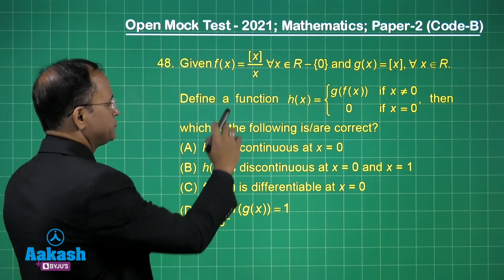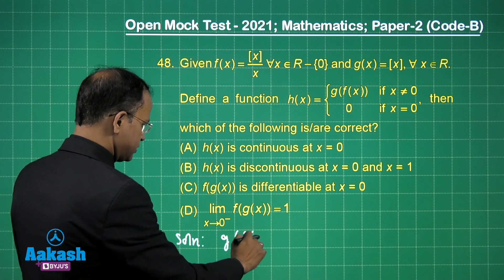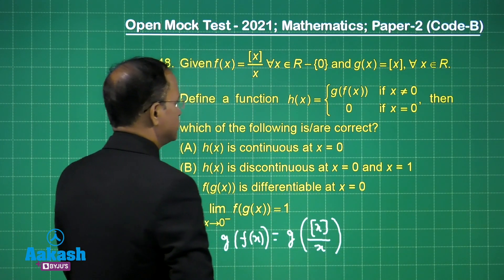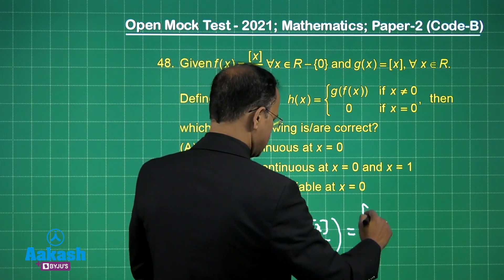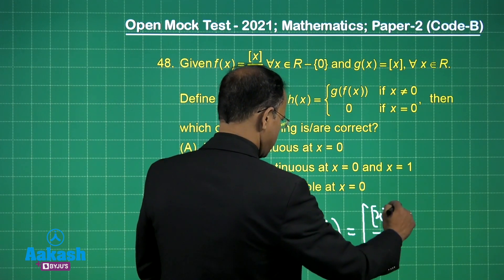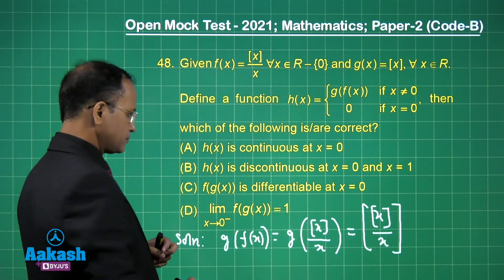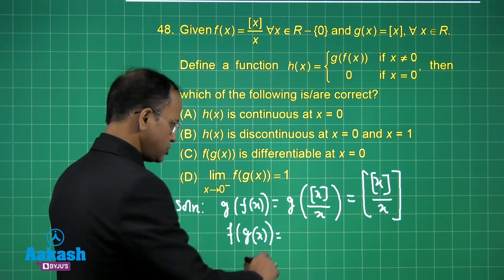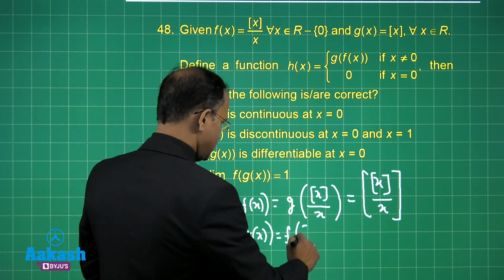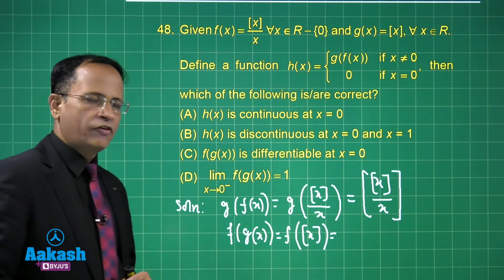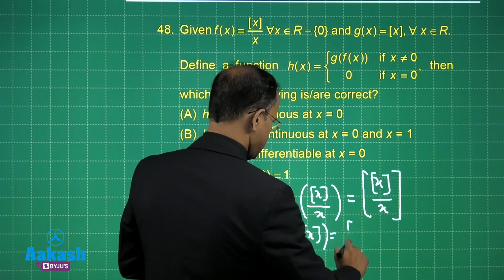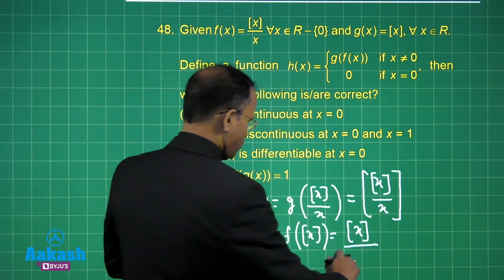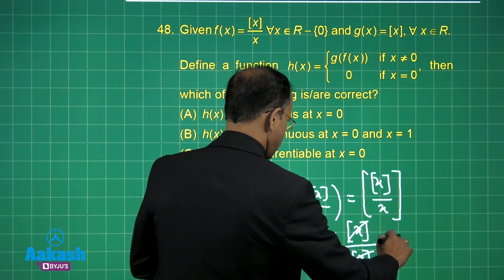We find g(f(x)) by computing g of f(x), where f(x) = ⌊x/|x|⌋, and then applying the greatest integer function to the result. Similarly, f(g(x)) is also needed, where g(x) = ⌊x⌋. The double greatest integer sign can be written singly, and in place of x we write the expression, giving the result as 1.